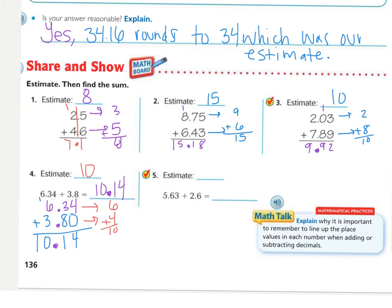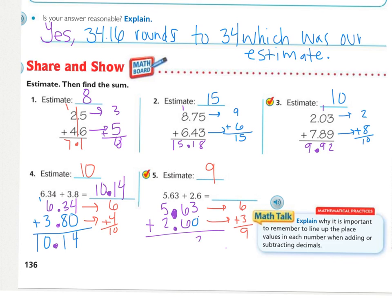Same thing with number 5. I'm going to do my decimals and then set up my problem. I have my estimate. Now I'm going to find my answer: 3 plus 0 is 3, 6 and 6 is 12 — regrouping — 5 and 2 is 7, plus 1 is 8. Bringing down my decimal. My answer is 8 and 23 hundredths.